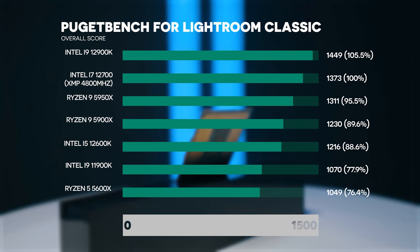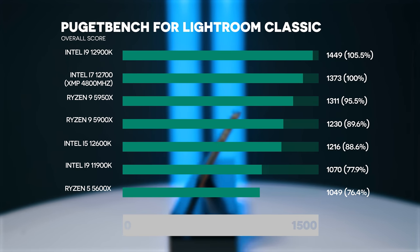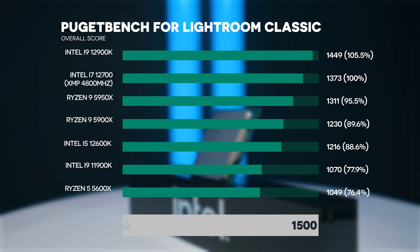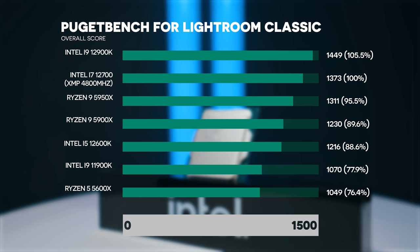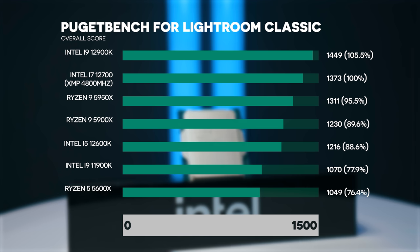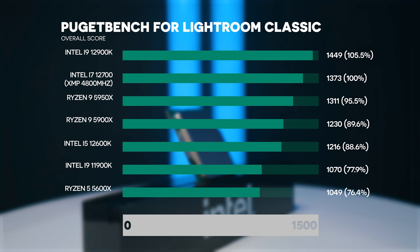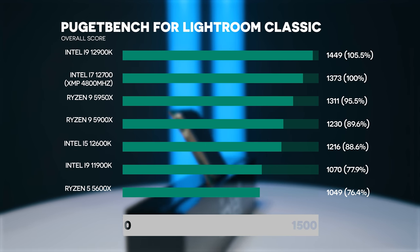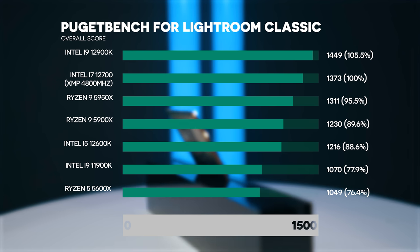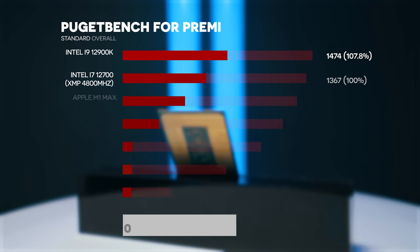Moving on to Lightroom Classic, another photo editing application. The 12900K is 5.5 percent faster than the 12700. The i5 12600K is about 12 percent slower - a much bigger difference - because Lightroom can more utilize multi-core performance when exporting and converting photos. The Ryzen 9 5900X with the same core count is about 10.4 percent slower than the 12700, and the Ryzen 9 5950X is about 4.5 percent slower.